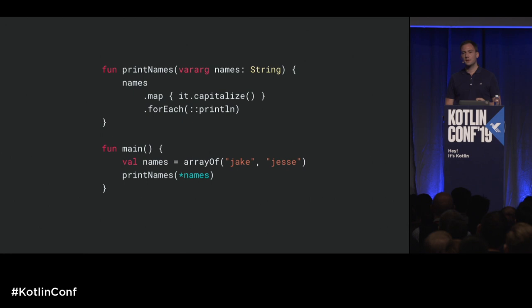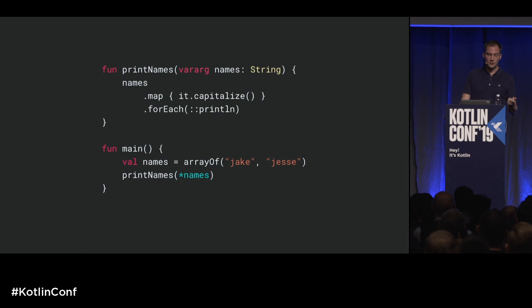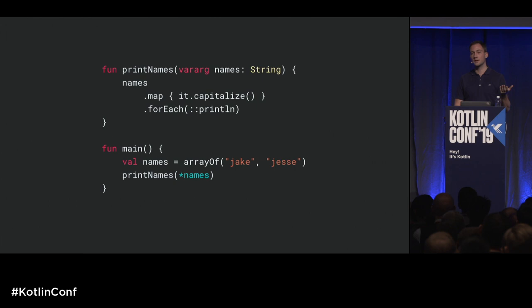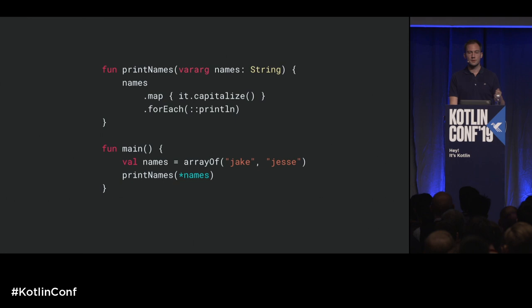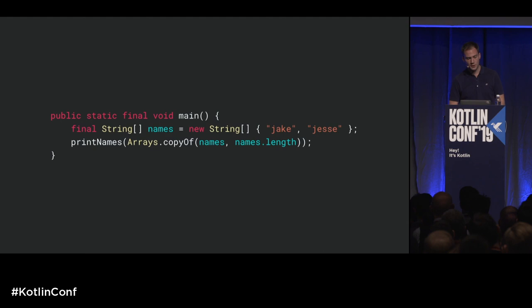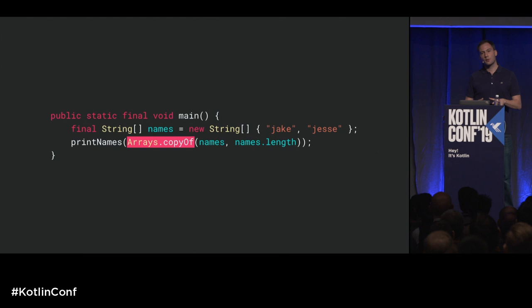If the function takes an array, what happens if we create the array ourselves so the compiler doesn't have to? Here I call arrayOf to create the array myself and then want to pass it to the function. You cannot pass the array directly because your varargs could be a vararg of arrays. So in Kotlin there's the spread operator: put a little star at the beginning of the variable, telling the compiler to take every member of the array and make it a parameter of the function. Looking at the generated code, our array of names is created as expected, but there's this new call to Arrays.copyOf — this is important because this makes sure the function you're calling is not going to modify the array.